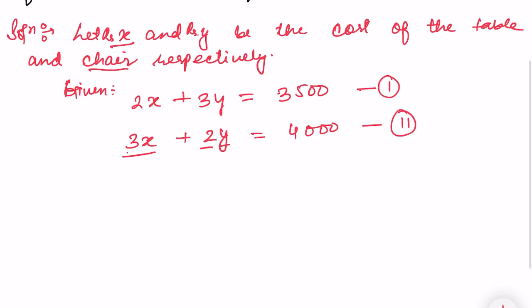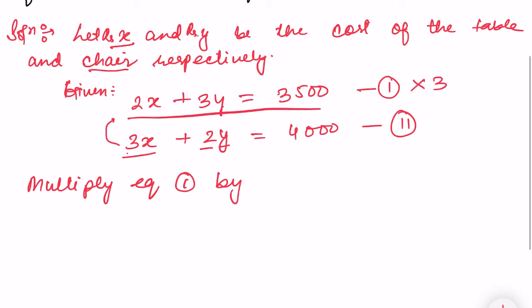Now I can solve equations 1 and 2 by any method. But what I shall do is multiply equation 1 by 3 and equation 2 by 2. What will happen? If you multiply equation 1 by 3, this 2 becomes 6. And if you multiply equation 2 by 2, 3 becomes 6. So the coefficients will become equal. Multiply equation 1 by 3 and equation 2 by 2, and subtract.